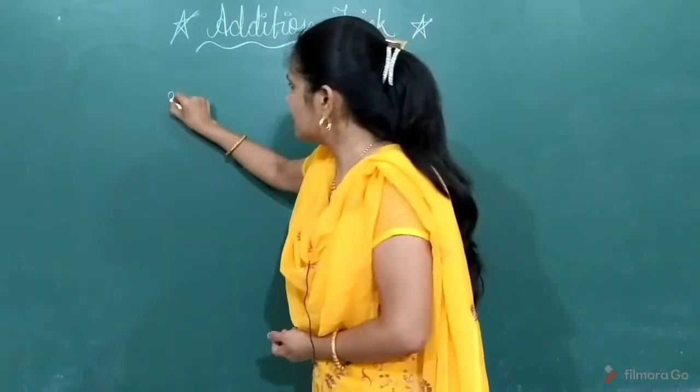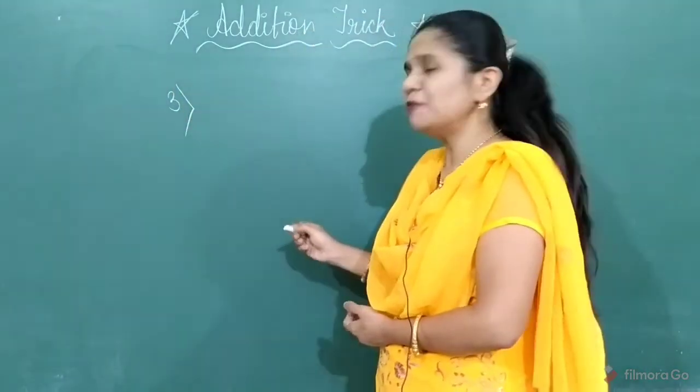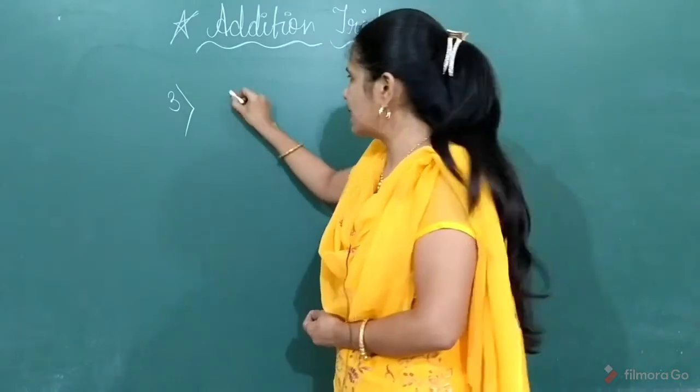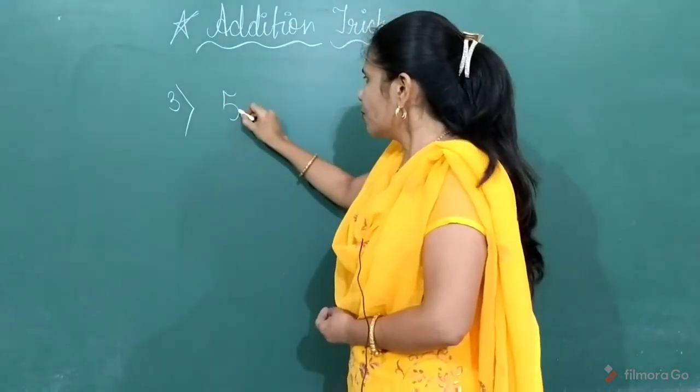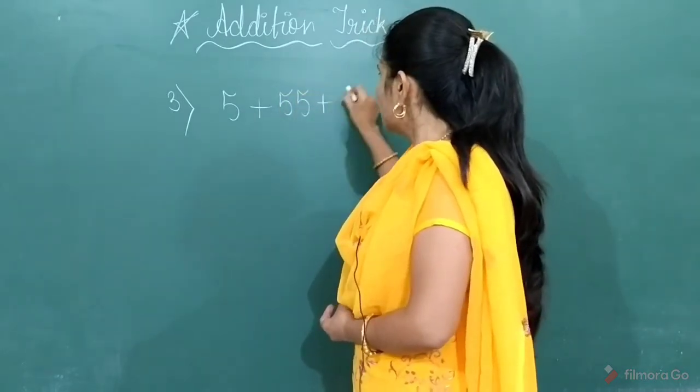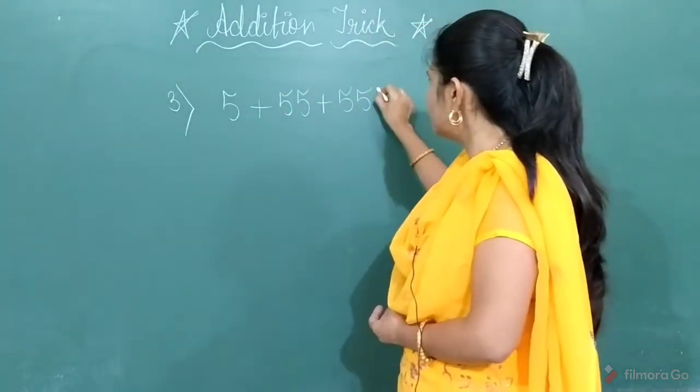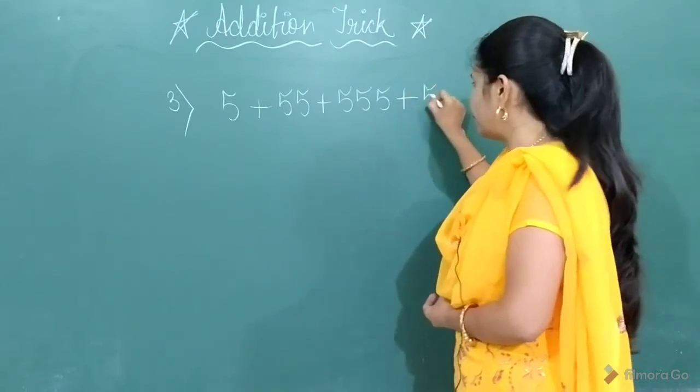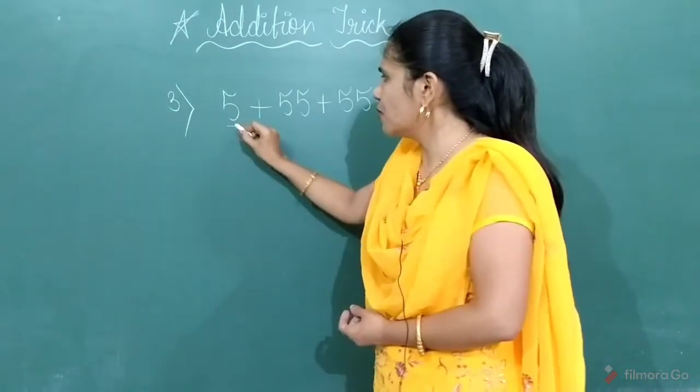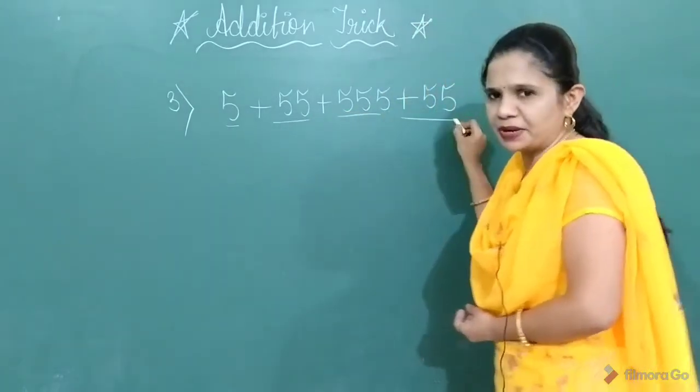Let's take the last example of different type to clear your confusion. Suppose you will get in exam the number series to add, for example, 5 plus 55 plus 55 plus 55. As I said, first you have to write down how many digits are repeating.